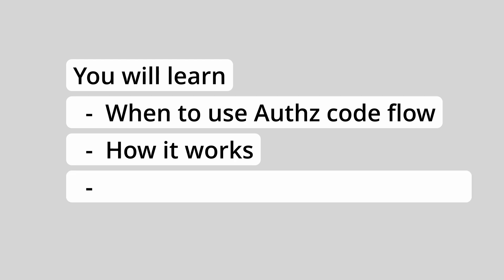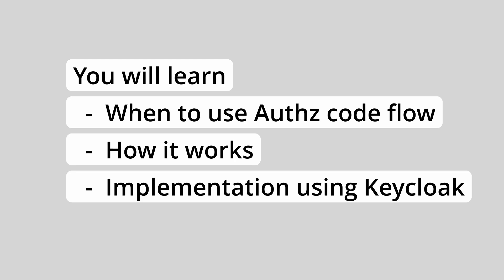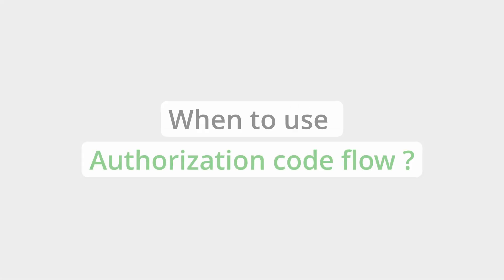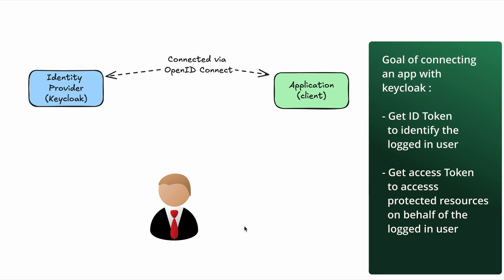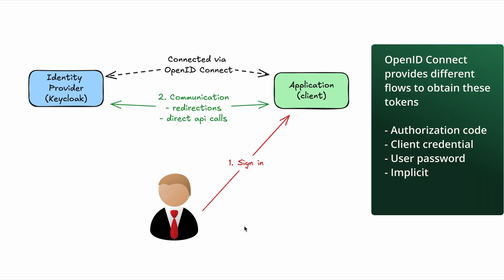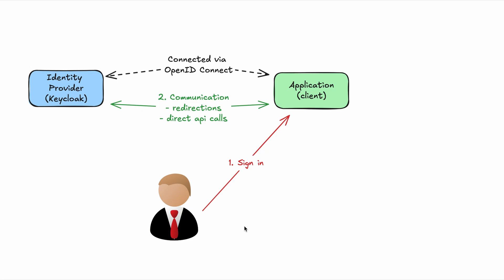After connecting an application with an identity provider like Keycloak using the OpenID Connect protocol, our goal is to receive an ID token and optionally an access token and a refresh token from the identity provider whenever a user signs in. OpenID Connect provides different flows based on the use case to obtain these tokens.